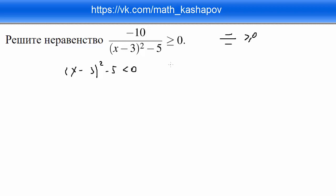Получается, x минус 3 в квадрате минус корень из 5 всё это в квадрате меньше 0.